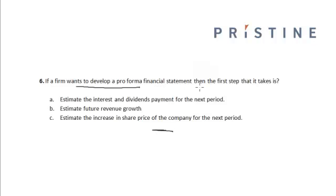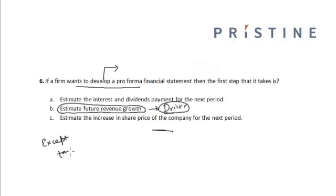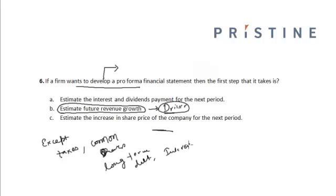A firm wants to develop a pro forma financial statement. In a pro forma financial statement, we try to generate financial statements — that is, the income statement or the balance sheet — for future years. First, we have to assume the driver for both statements. In this case, we assume that the revenue growth is the driver, and all other items, except taxes, common shares, long-term debt, and interest paid on it, are expressed as a percentage of sales.